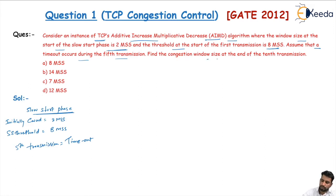We need to find the congestion window size at the end of the 10th transmission.